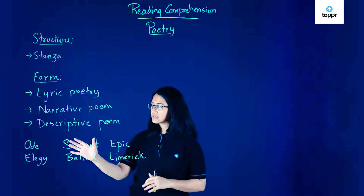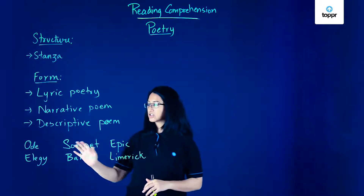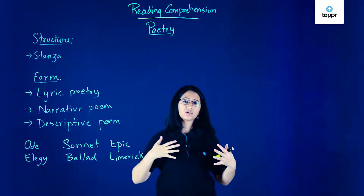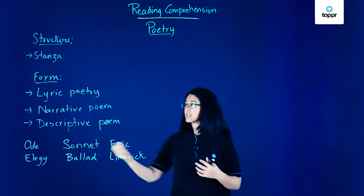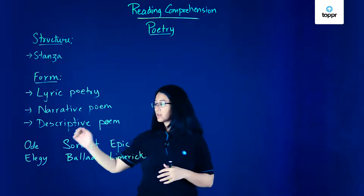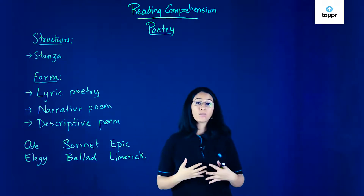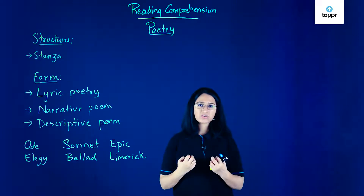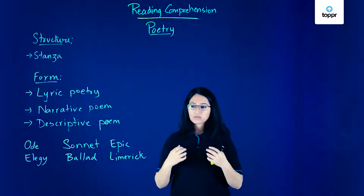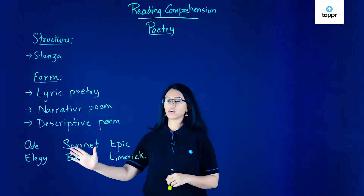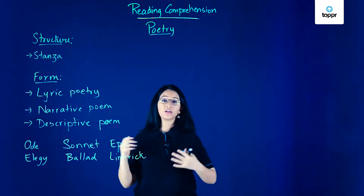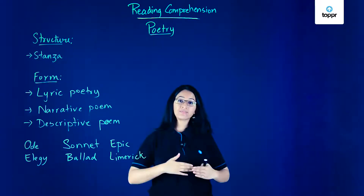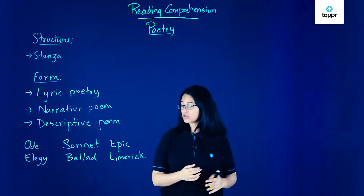Apart from these, we have subsets such as an ode — a poem that talks about a serious topic and is a type of lyric poem. We have an elegy, which is a poem about someone who has passed away, written in a more serious tone about mourning. The sonnet is a short rhyming lyric poem with specifically 14 lines, giving it a very fixed structure.